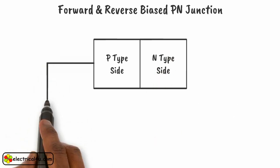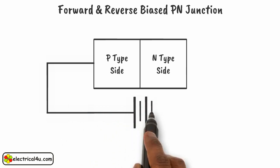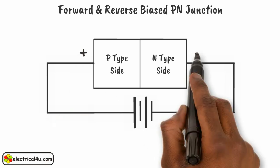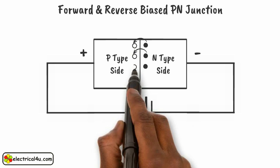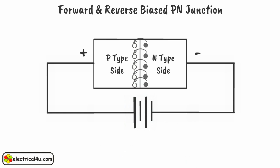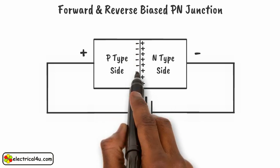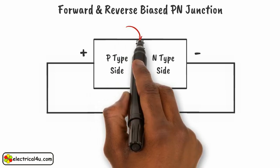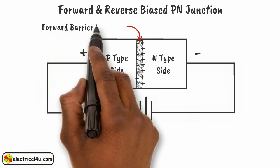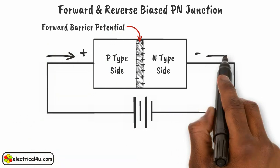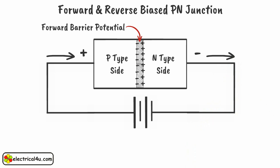Here, we connect the positive terminal of a DC source with the P-type side of the junction, and the negative terminal of that DC source with the N-type side of the junction. Adjacent to this junction edge, free electrons in the N-type material recombine with holes in the P-type material, forming the depletion region. Current through the junction can only start flowing in the forward direction when we apply DC voltage more than the forward barrier potential. The forward barrier potential of a silicon P-N junction is 0.7 volt, so we have to apply forward voltage more than 0.7 volts. This condition we call the forward biased condition of the P-N junction.